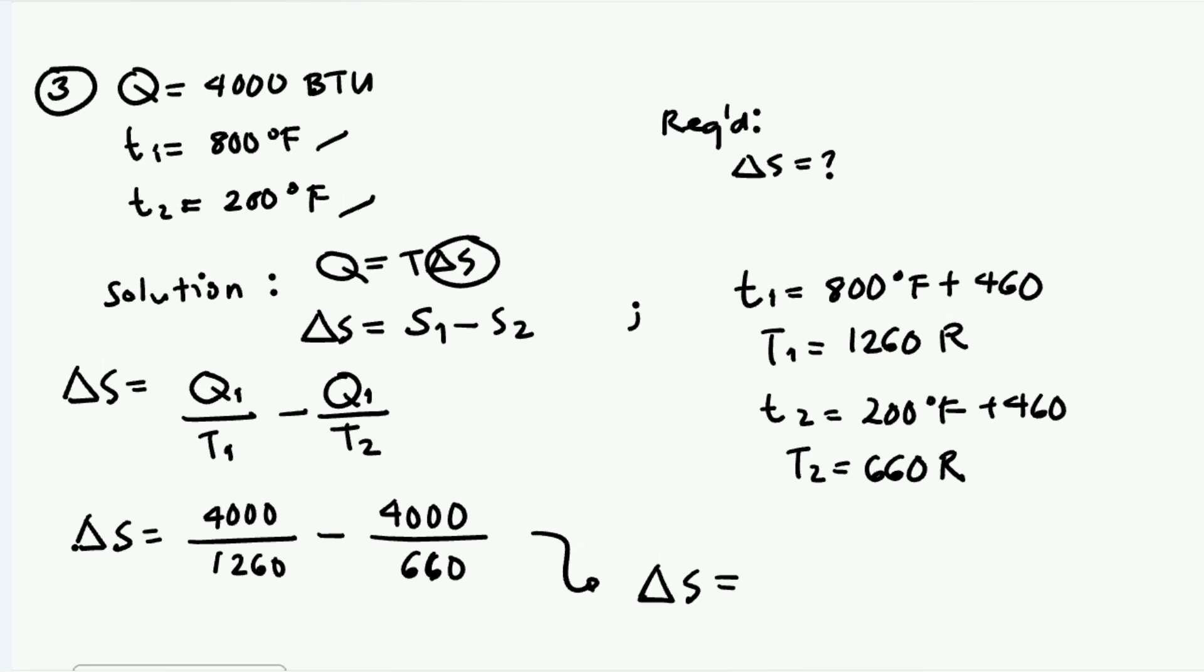So we solve for our change in entropy. The final unit will be BTU per degree Rankine. So let's solve: 4000 over 1260 minus 4000 over 660 gives us negative 2.89. Since in our choices there's no unit mentioned, automatically the answer is letter A. But if you check, the final unit is BTU per Rankine. That is our value for our change in entropy in problem number three. We proceed to problem number four.